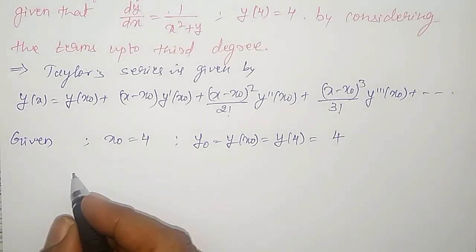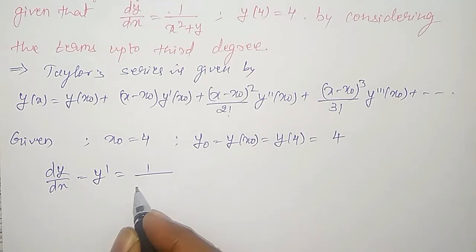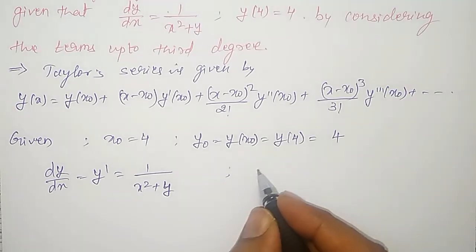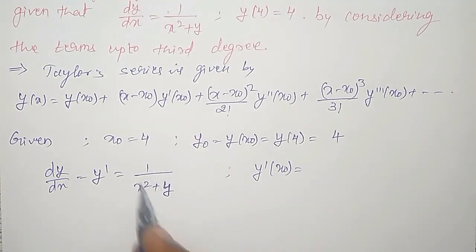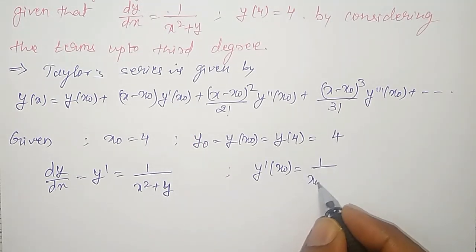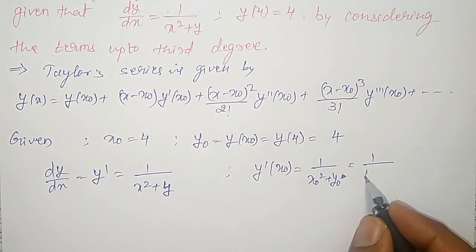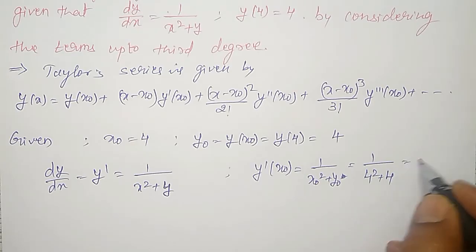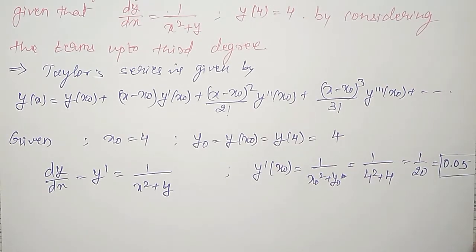Next, given dy/dx, that is y' = 1/(x² + y). Therefore y'(x₀) = 1/(x₀² + y₀) = 1/(4² + 4) = 1/(16 + 4) = 1/20 = 0.05. This is my y'(x₀).